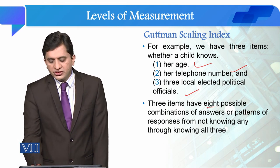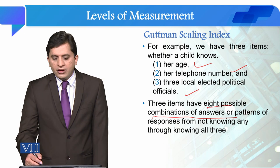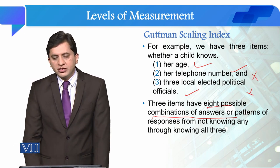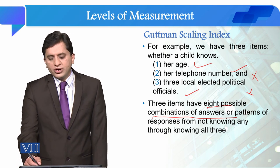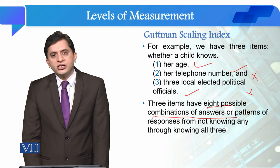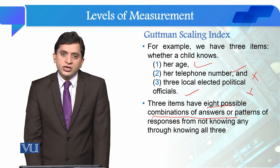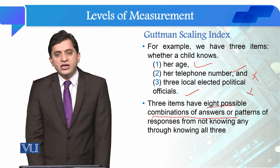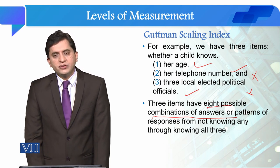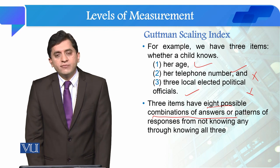There are eight possible answer compositions. We use Goodman Scaling in particular social situations and we utilize it when we assume that our items are interrelated and in the shape of a hierarchy.